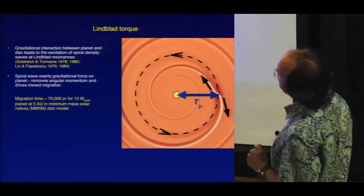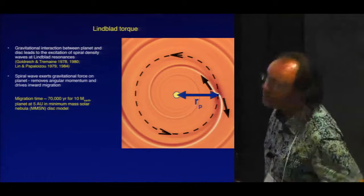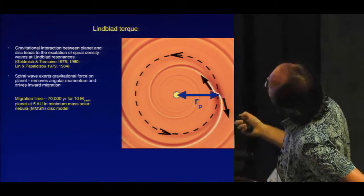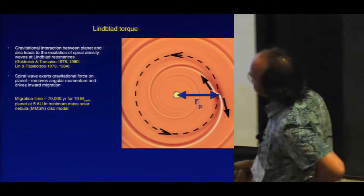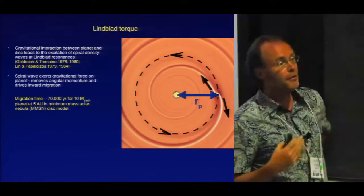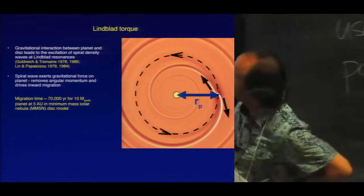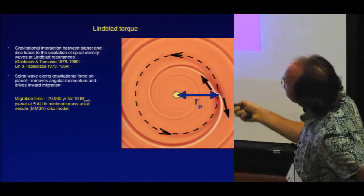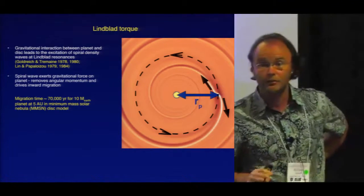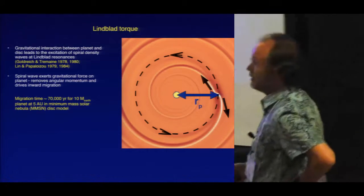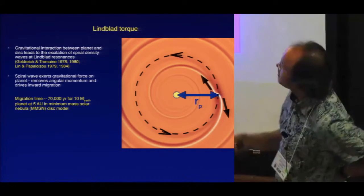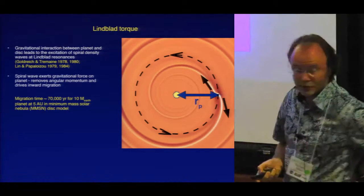Normally we would expect the Lindblad torque, which derives from this spiral wave, to drive inward migration. And the timescale is actually very fast. If you take a 10 Earth mass planet in a canonical minimum mass solar nebula model, then the Lindblad torque on its own would cause migration into the star on a timescale of around 70,000 years — much shorter than the timescale required to accrete a gaseous envelope, and also much shorter than the disk lifetime.